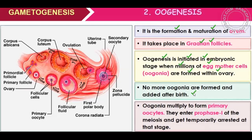In the embryonic stage, we have learned that the development of the testes is in the embryonic stage inside the abdomen. But oogenesis occurs inside the mother's uterus. The woman forms an oogenesis form as long as she makes eggs.